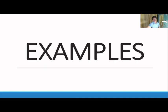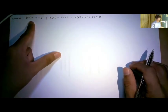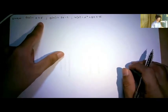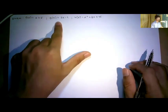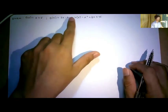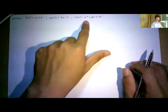Let's proceed to the examples. We have three given functions: f(x) = x + 5, g(x) = 2x - 1, and h(x) = x² + 8x + 15.